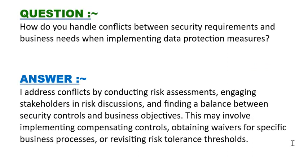Our next question is: how do you handle conflicts between security requirements and business needs when implementing data protection measures? I address conflicts by conducting risk assessments, engaging stakeholders in risk discussions, and finding a balance between security controls and business objectives. This may involve implementing compensating controls, obtaining waivers for specific business processes, or revisiting risk tolerance thresholds.